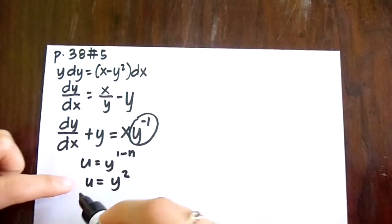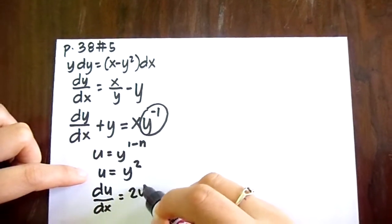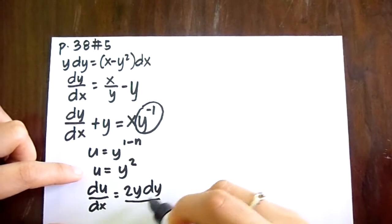So differentiating this with respect to x, we have du over dx equals 2y dy over dx.